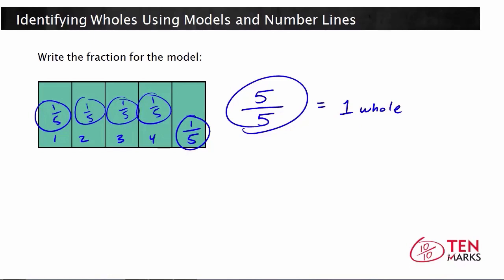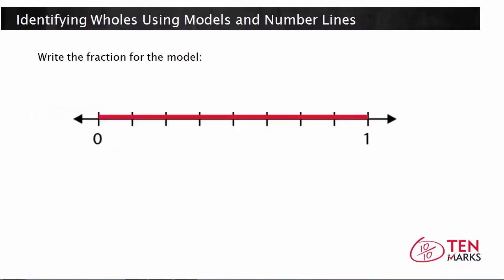Let's go back to that third model. Here we have a number line. If you look at the number line, there are eight different parts that are in between zero and one. So the total number of parts, or the denominator of the fraction, is eight.